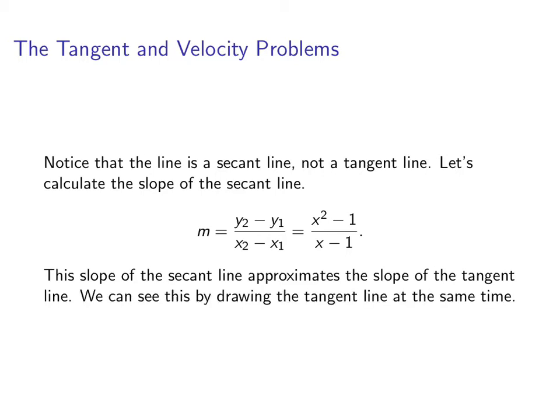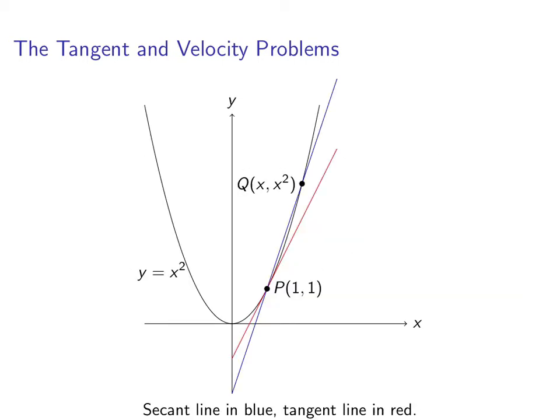Now we can actually see this by drawing that tangent line at the same time. So here's what the picture looks like. The secant line that we were drawing before, it's in blue and the tangent line is in red. Notice that as the point Q gets closer to P, the better approximation that we're going to get.